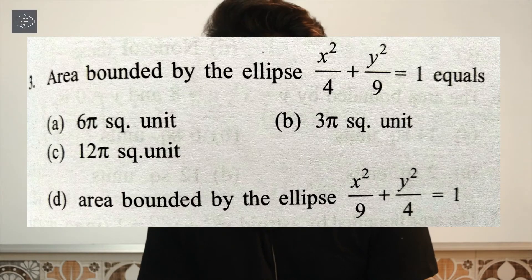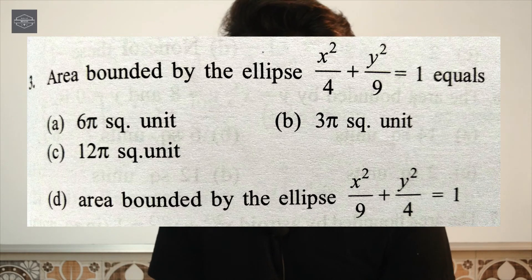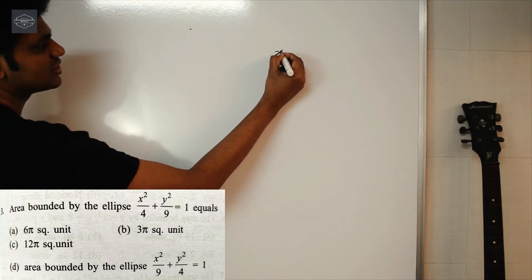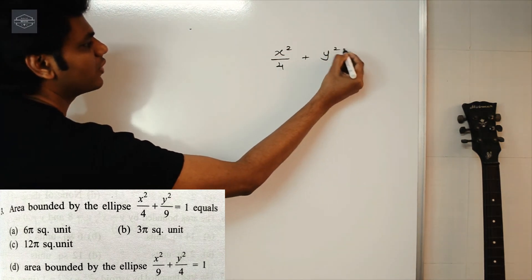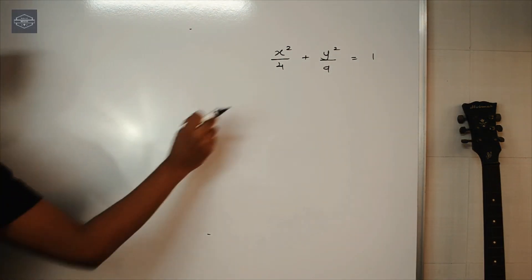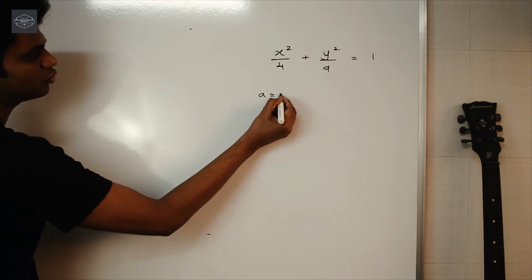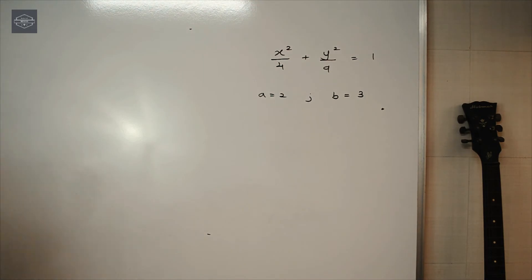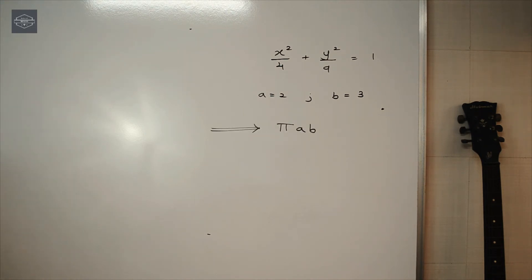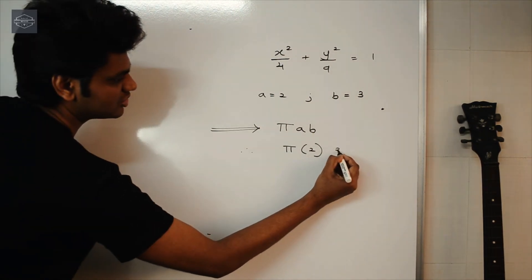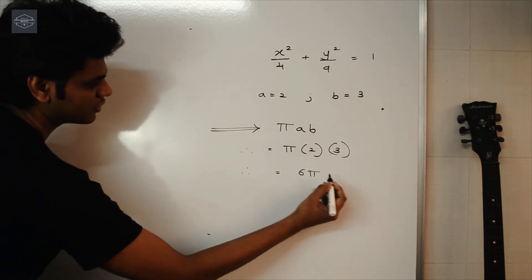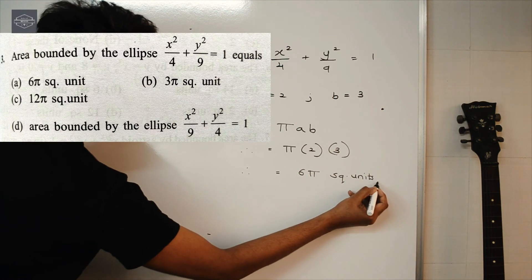The next question is: area bounded by the ellipse x²/4 + y²/9 = 1. We have a short and simple formula for the area of an ellipse. Comparing with the standard form, a² = 4 so a = 2, and b² = 9 so b = 3. The area of an ellipse is πab, so the answer is π × 2 × 3 = 6π square units, which is option A.